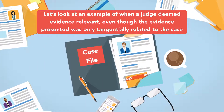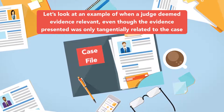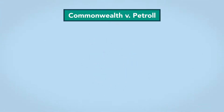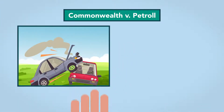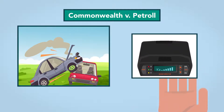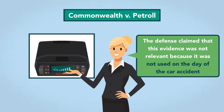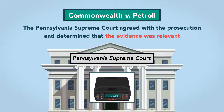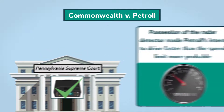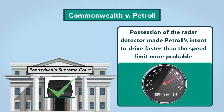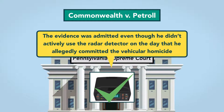Let's look at an example of when a judge deemed evidence relevant even though the evidence presented was only tangentially related to the case. In Commonwealth v. Petrol, the defendant was charged with vehicular homicide. The prosecution sought to introduce evidence that Petrol had a radar detector in his car that could be used to warn him of speed traps, claiming that his possession of one showed that Petrol intended to violate speed restrictions. The defense claimed this evidence was not relevant because it was not used on the day of the accident. The Pennsylvania Supreme Court agreed with the prosecution and determined that the evidence was relevant, reasoning that possession of the radar detector made Petrol's intent to drive faster than the speed limit more probable. Therefore, the evidence was admitted even though he didn't actively use the radar detector on the day that he allegedly committed the vehicular homicide.